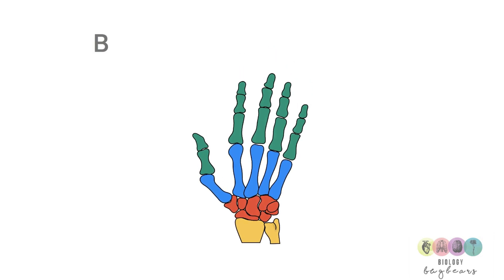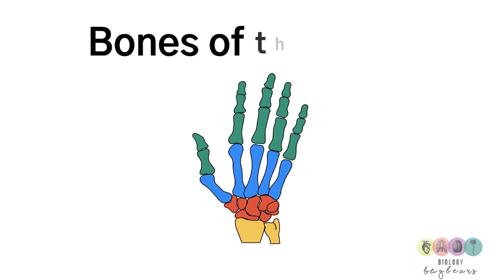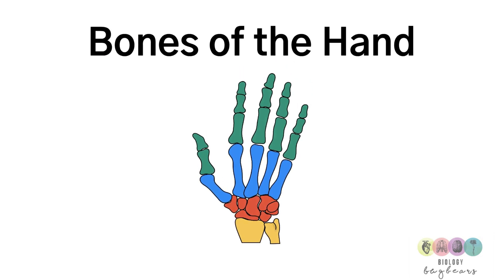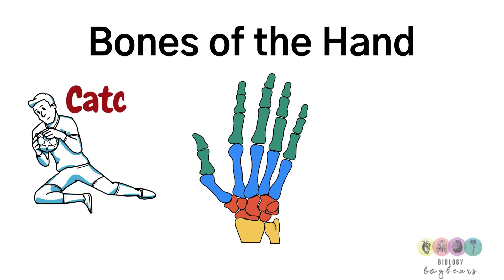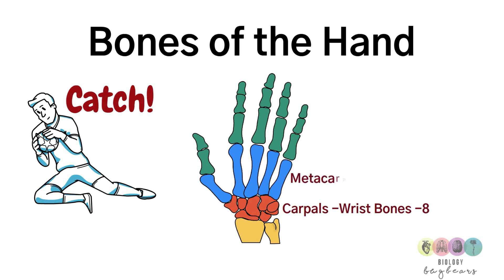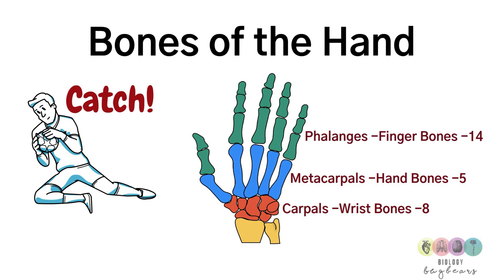Moving on to the bones in the hand — it's really important to know specifically what they are and where they're located. Think of 'to catch': the bones in the wrist are the carpals, and there are eight of those; the bones in the palm of your hand are the metacarpals, and there are five; and the bones in the fingers are the phalanges, and there are 14 of those.